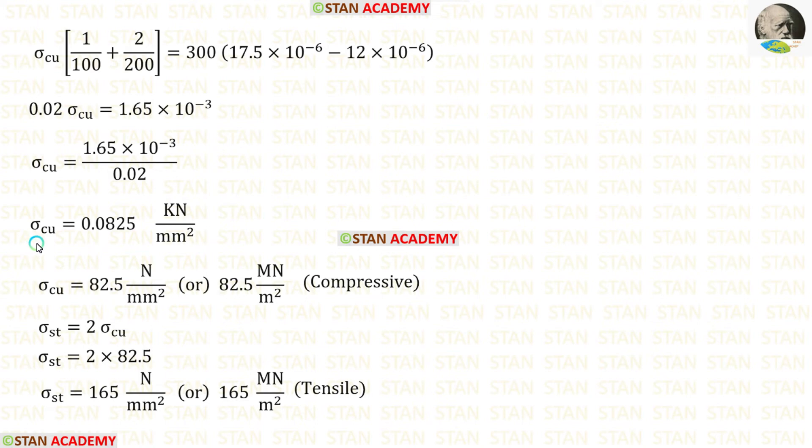After the calculation, we are getting sigma Cu. We can convert sigma Cu either in Newton per millimeter square or meganewton per meter square. We know that sigma Cu is compressive. To find sigma St, we have to multiply sigma Cu by 2. When we do that, we are getting sigma St which is tensile.